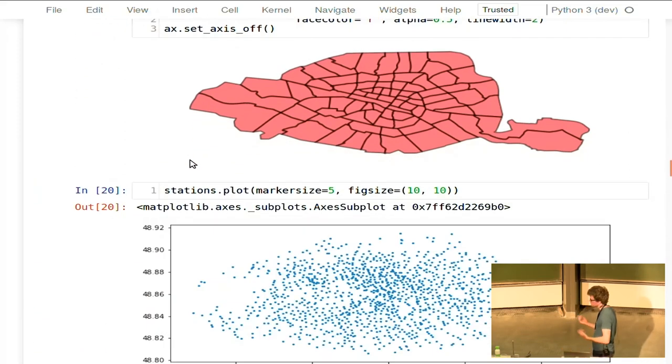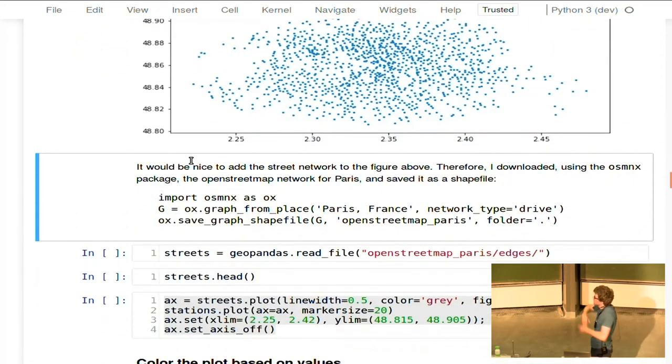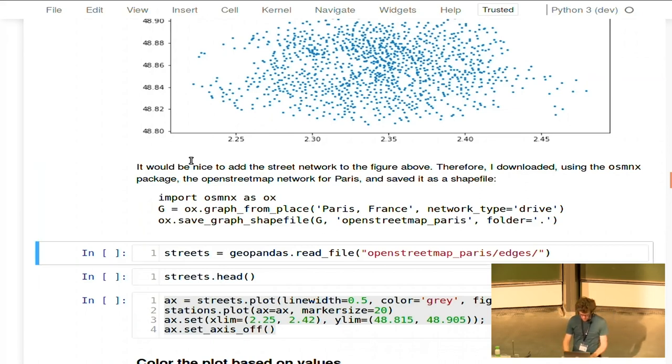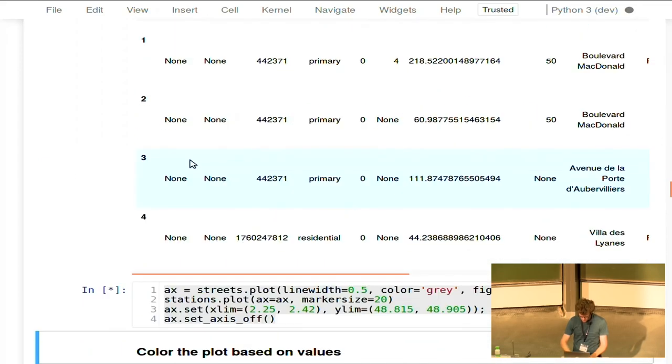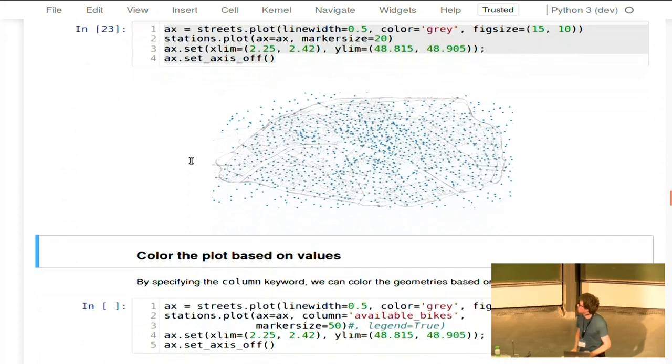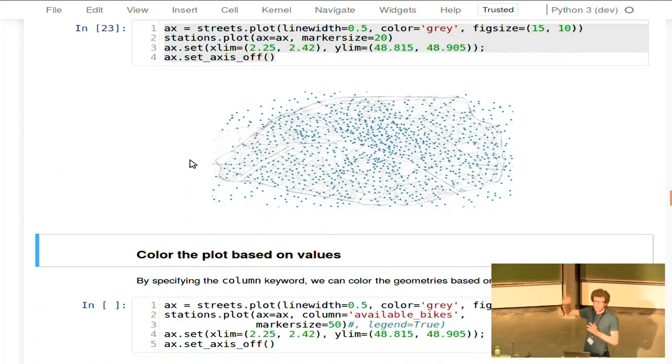You can also plot the points. Here's just, of course, a cloud of points. In this case, for the points, it might be nice, for example, that you can also show the streets behind it. So what did I do for the demo? I downloaded using the OSMnx library, from OpenStreetMap, just a shapefile of all the streets, and I can, for example, then make a combined plot with now two dataframes, one dataframe with line strings, and I added there all the different points of my stations.